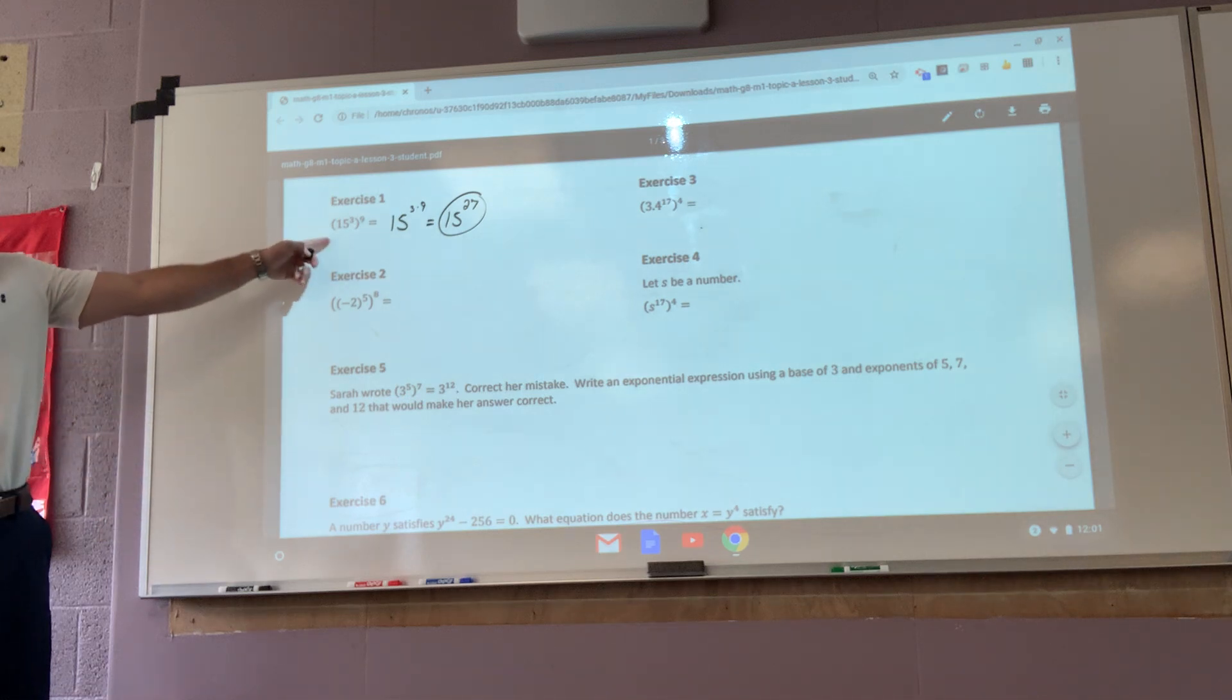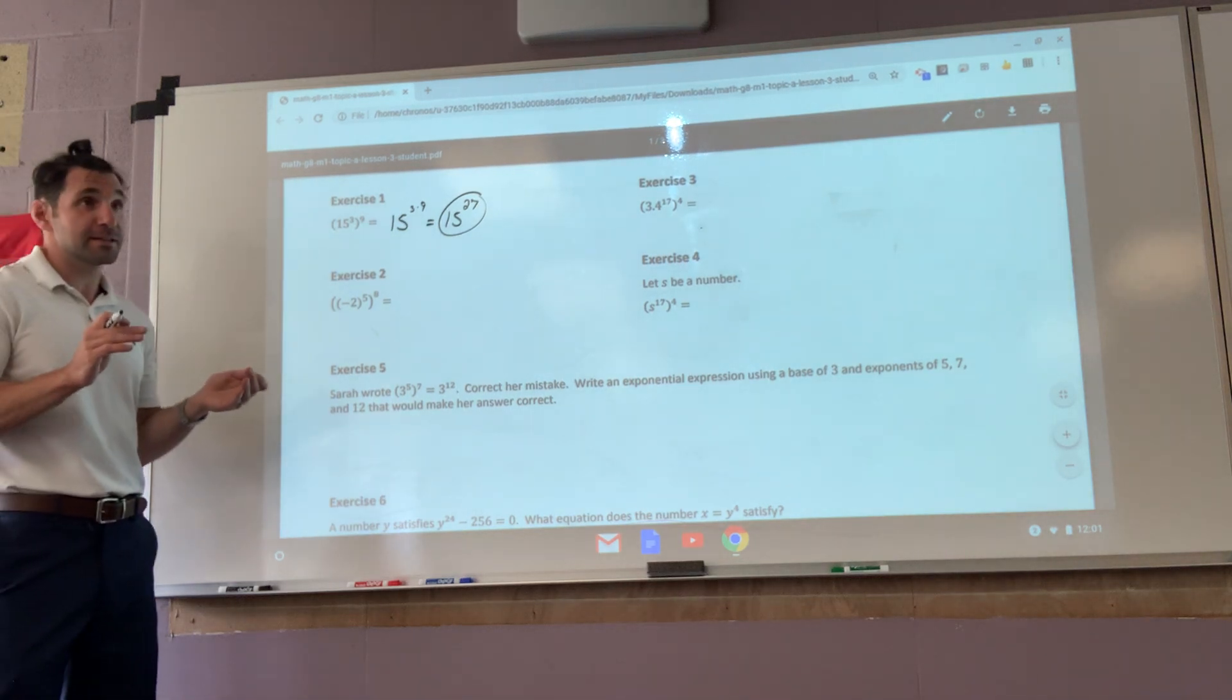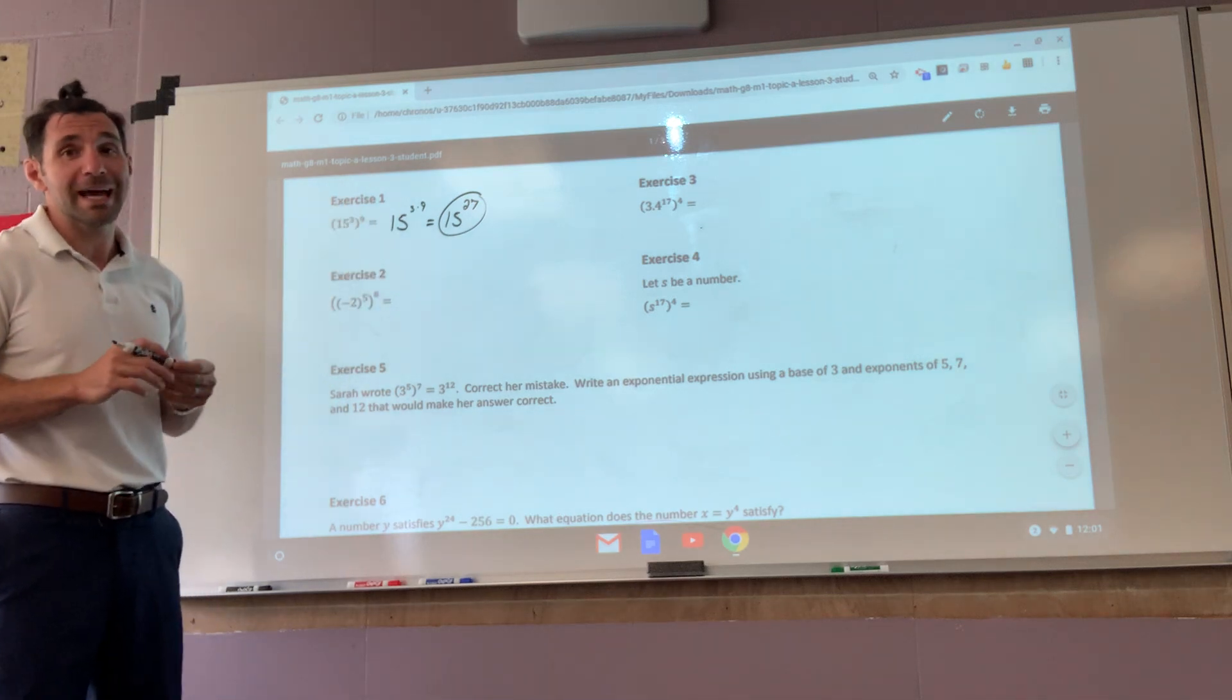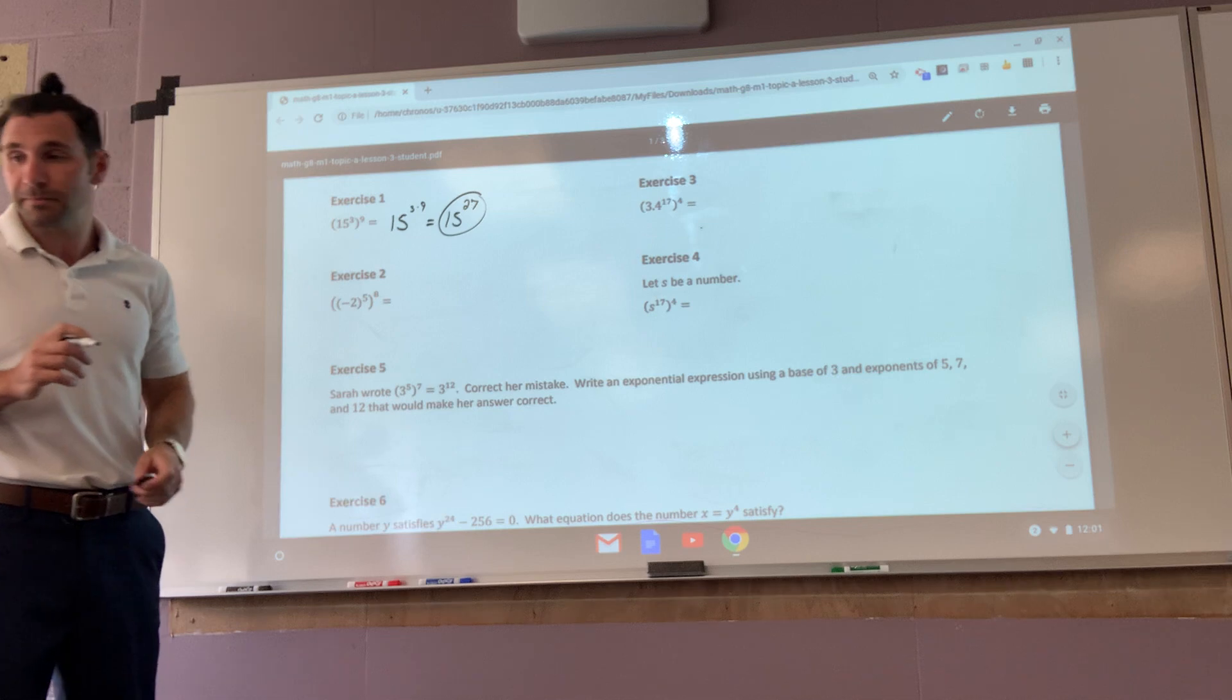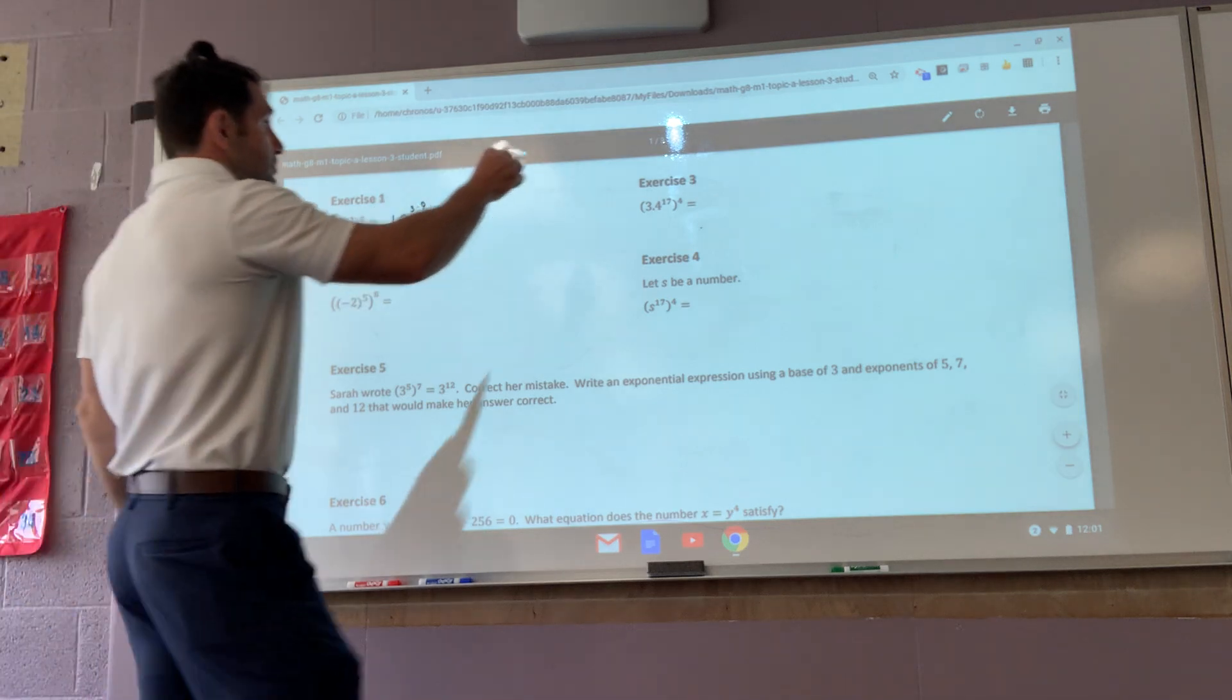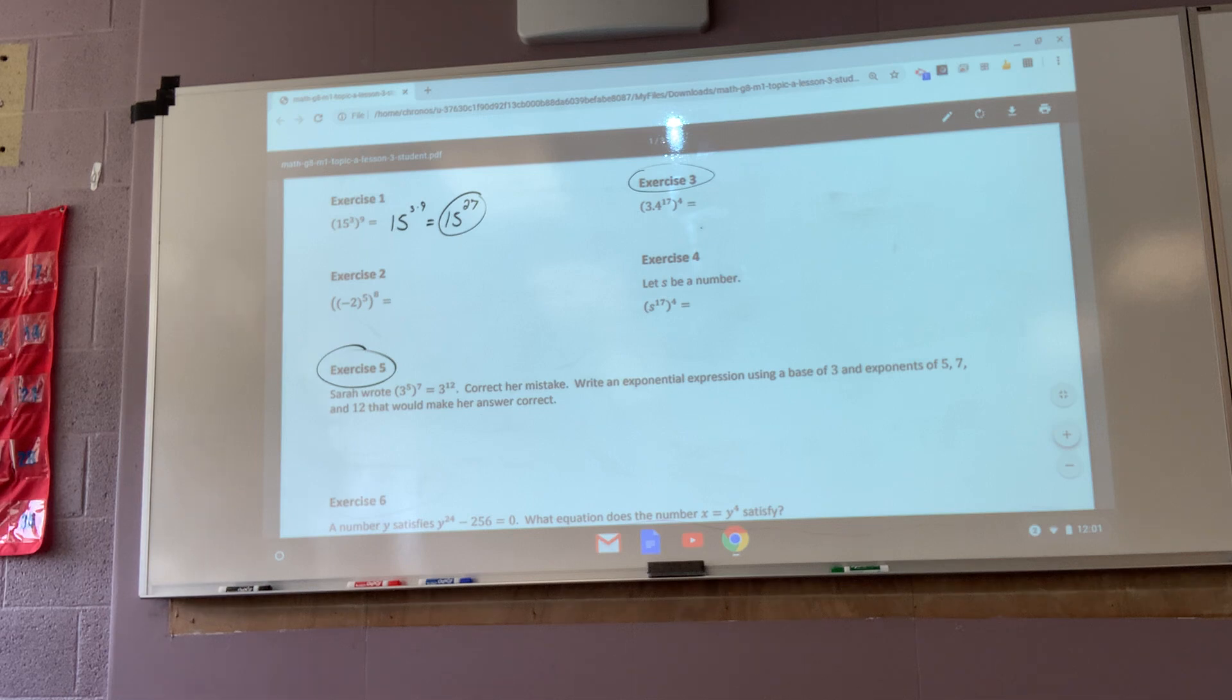Could I prove that? Absolutely. I could write out fifteen times fifteen times fifteen, put those in parentheses, and then have that nine times. But I assure you, you're still going to have that nine times, which is twenty-seventh. I'd like you to do example three and example five. So you're doing this one and this one. Pause me and go.